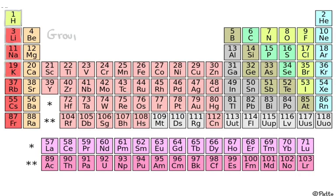As a result, they are in what we call group one. They are over here in group one because they contain one electron in the last shell, which includes hydrogen. It's not a typical group one element, but it contains one electron in the last shell, so we put it there in group one. That's what defines it — one electron in the last shell.